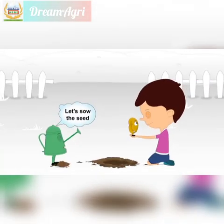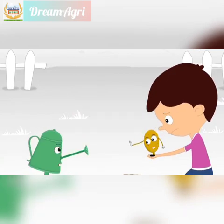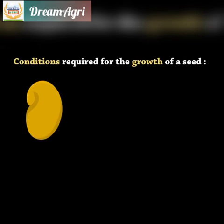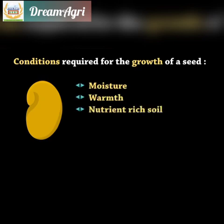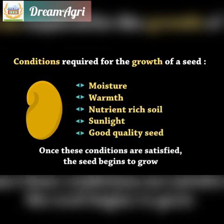Let's sow the seed. Conditions required for the growth of a seed are: moisture, warmth, nutrient-rich soil, sunlight, and good quality seed. Once these conditions are satisfied, the seed begins to grow.